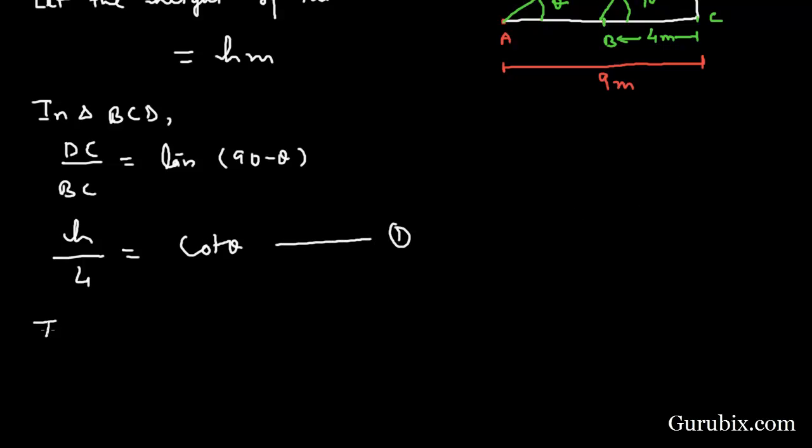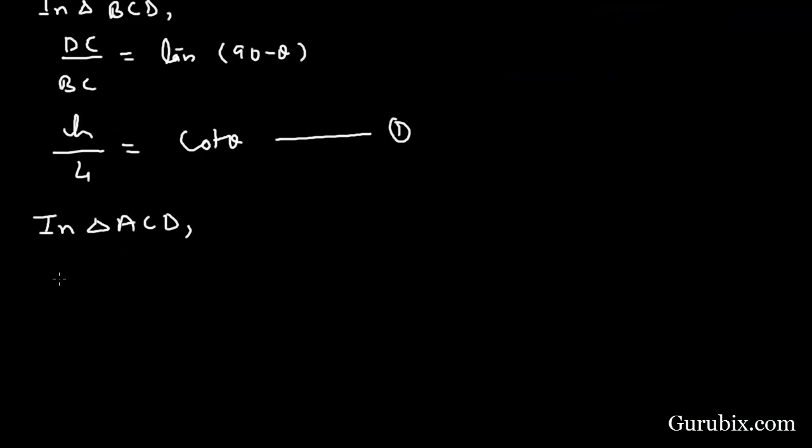And now we shall move to triangle ACD. In this triangle we shall find the ratio of DC over AD, and that is tan theta. Here DC is H, this is 9, this is tan theta. And this is our equation number 2.